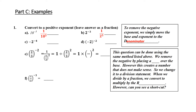For negative 2 to the negative 4 — notice the exponent is only over the 2, not the negative sign. So keep the negative outside the fraction and take 1 over 2 to the positive 4. For d, this one has brackets, which means the exponent — negative or positive — applies to both the negative and the 2. Take the power and place a 1 over it; the negative is included inside the bracket.